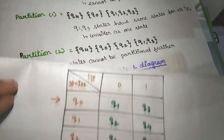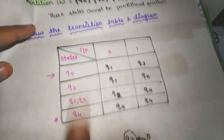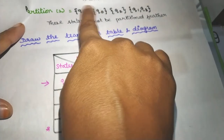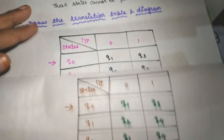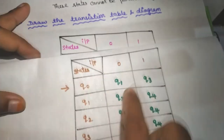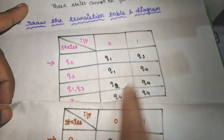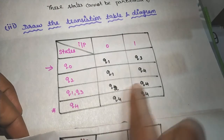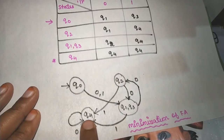Looking at this, you can see the partition is: Q1 and Q3 are the same state, and Q2 is different. There is a new transition table and transition diagram. The sets are: {Q0}, {Q2}, {Q1, Q3}, and {Q4}. Q0 is the starting state and Q4 is the final state. Q1 and Q3 equal the same state as Q2 and Q3.